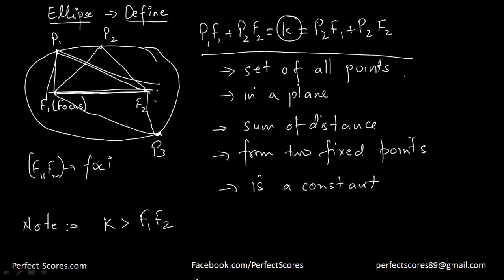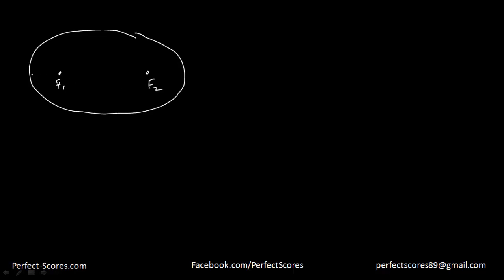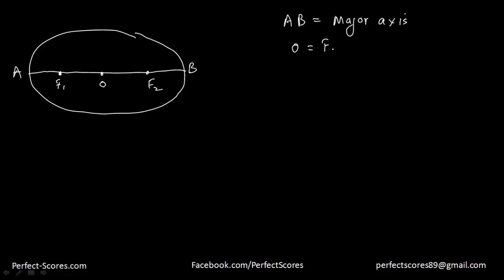Now let's go ahead and define some of the components of an ellipse. I'm going to draw an ellipse, and we have the first focus F1 and the second focus F2. The line which crosses through the focus points is known as the major axis. Let's say this is A and this is B, so line AB which crosses through the focus points is the major axis. There is also another line, and the midpoint of the focus points — let's call it O. The line which crosses through this midpoint, let's call it CD, and CD is known as the minor axis.